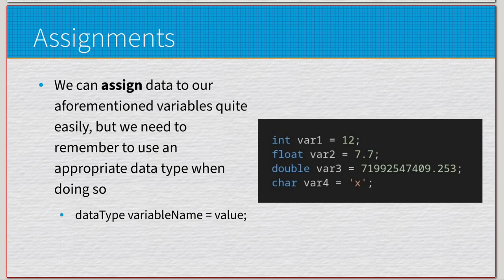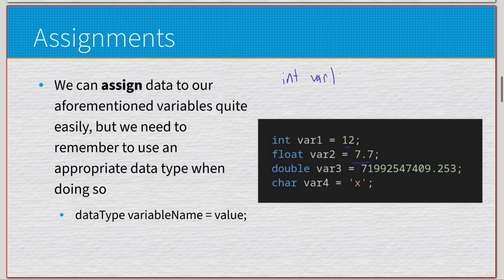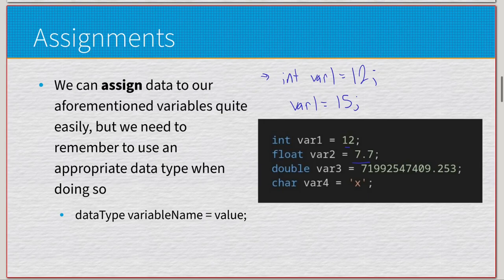When assigning data, for example 'int var1 = 12', that's essentially saying this is what I want stored at that memory location. If I have int var1 down here, I can say I want var1 to be 12. Later I can do var1 = 15 to overwrite it — it'll be the same memory location. The variable has been initialized with its data type of integer, and the name is var1.